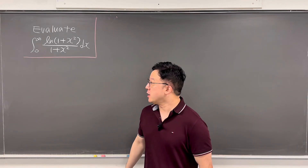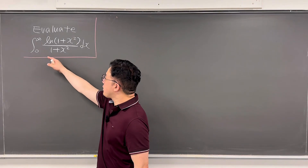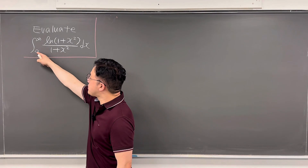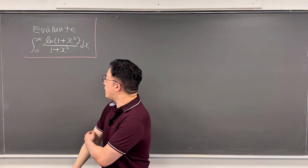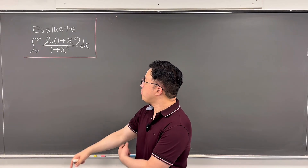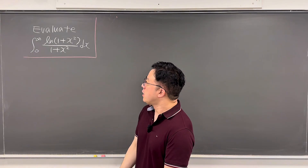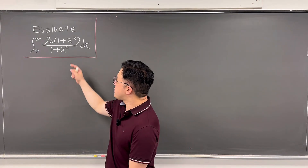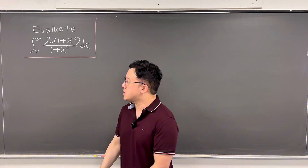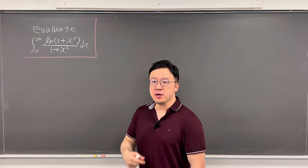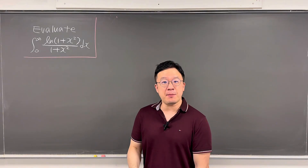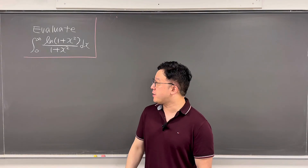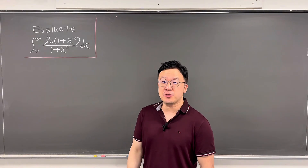Okay, here's the question. We need to evaluate the integral from 0 to infinity of ln(1 + x²) over (1 + x²) dx. I'll be using the semicircle contour method and residue theorem.